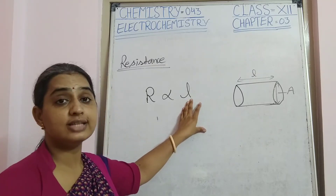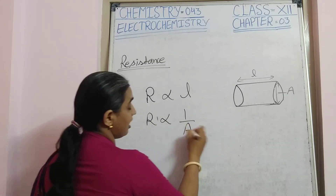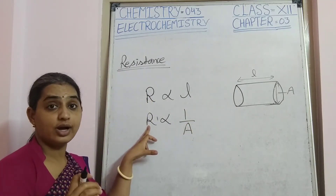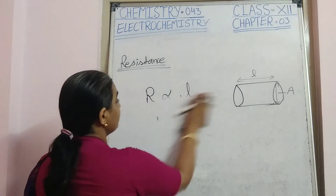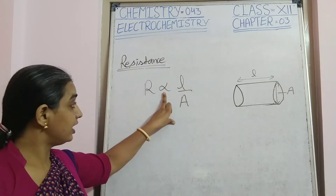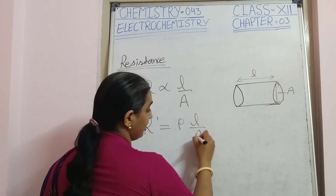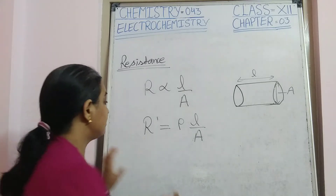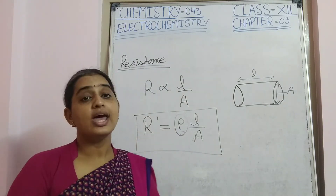Resistance R is directly proportional to the length L of the conductor — if the length increases, resistance also increases. And R is inversely proportional to the cross-sectional area A — if the area is larger, resistance is lower. Combining both: R ∝ L/A. Removing the proportionality sign, we introduce the constant rho, giving us R = ρL/A, where rho is the specific resistance or resistivity.